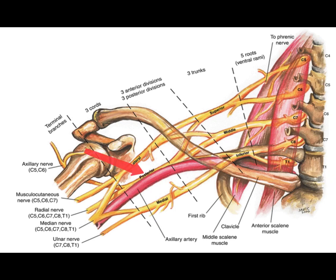The infraclavicular block is performed below the clavicle at the outer one-third of the clavicle to block the lateral, posterior, and medial cords of the brachial plexus. The axillary block is performed in the axillary fold, where the musculocutaneous, median, radial, and ulnar nerves can be individually identified and blocked.